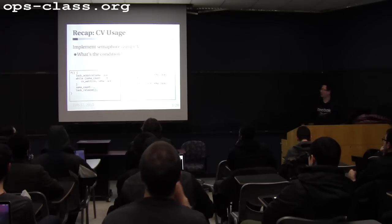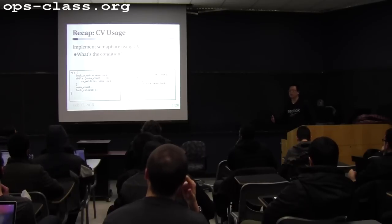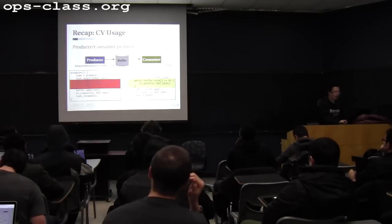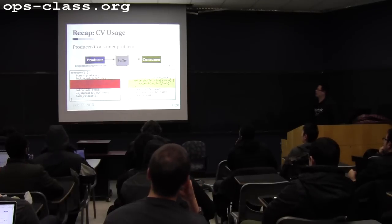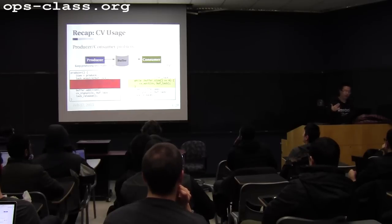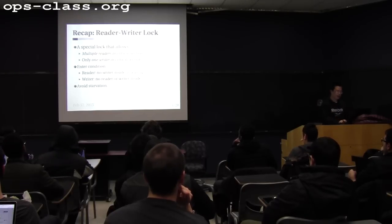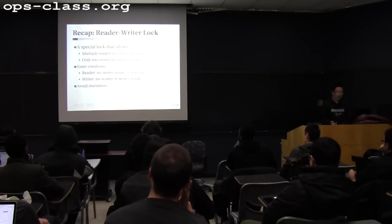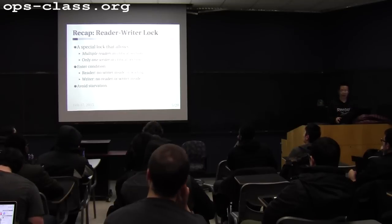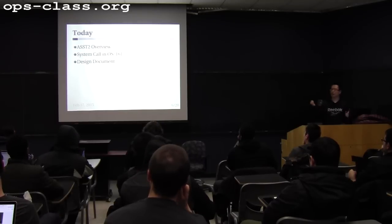Here's the example we went over last time — how to use CV to implement a semaphore. Basically the condition there is just to check if the count is zero. We also talked about how to use CV to implement the producer-consumer problem, where the condition is the state of the buffer — whether it's full or empty. And we also talked about reader-writer lock, what conditions allow reader and writer to enter the critical section, and how to avoid starvation by stopping the reader if there is a writer waiting.